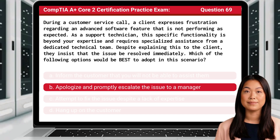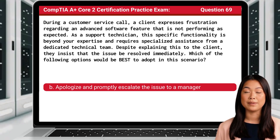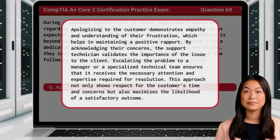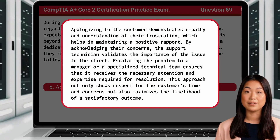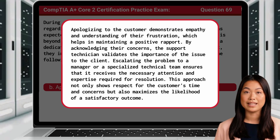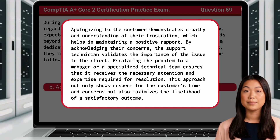The answer is B — Apologize and promptly escalate the issue to a manager. Apologizing to the customer demonstrates empathy and understanding of their frustration, which helps in maintaining a positive rapport. By acknowledging their concerns, the support technician validates the importance of the issue to the client. Escalating the problem to a manager or a specialized technical team ensures that it receives the necessary attention and expertise required for resolution. This approach not only shows respect for the customer's time and concerns, but also maximizes the likelihood of a satisfactory outcome.